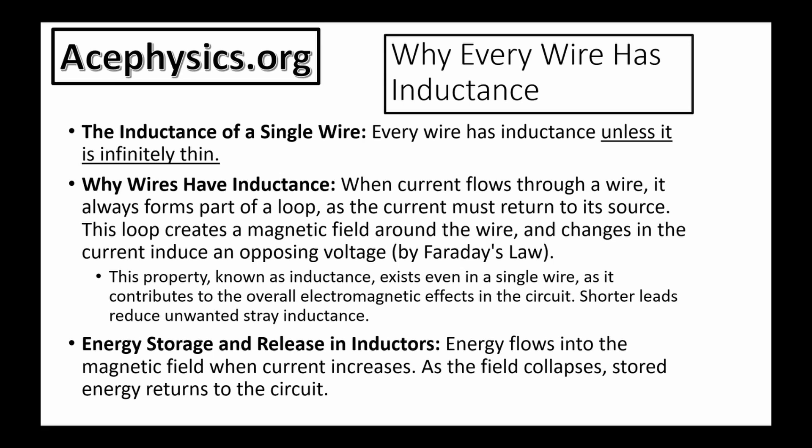When current flows through a wire, it always forms part of a loop as the current must return to its source. This loop creates a magnetic field around the wire, and changes in the current induce an opposing voltage by Faraday's law.